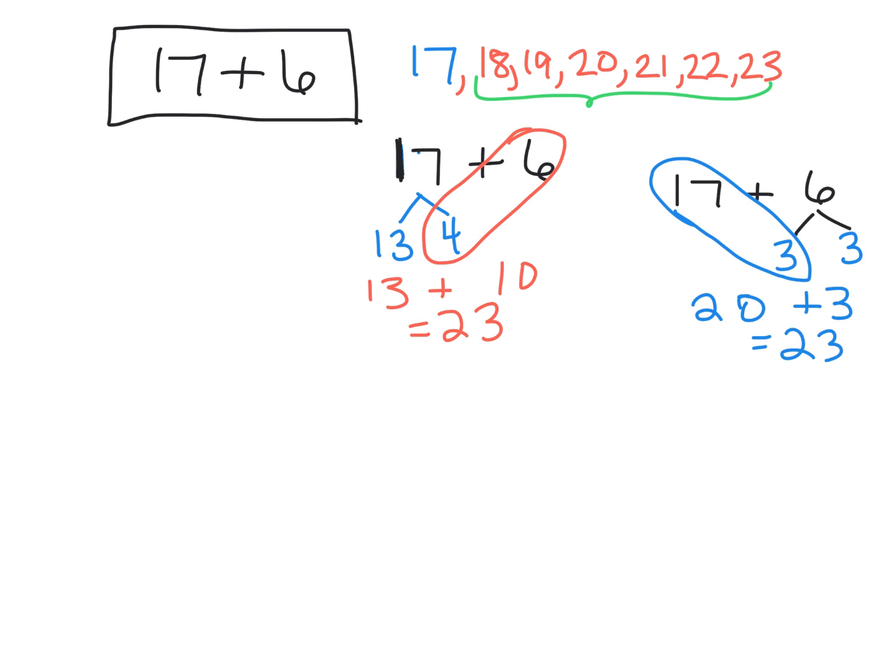Another student might say, 'I started with 17 plus 6 and I used the quick tens method. There's my 10, 1, 2, 3, 4, 5, 6, 7, so there's my 7. Then to do 6, I did 1, 2, 3 to fill out a 10, and then 4, 5, 6. So here is a new quick 10, and my answer is 23.'